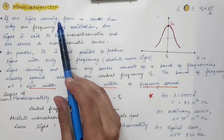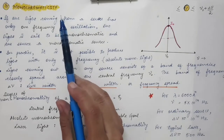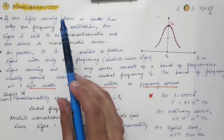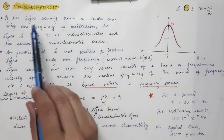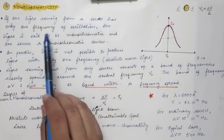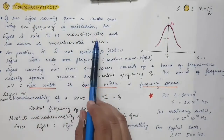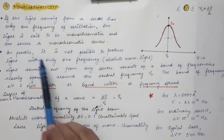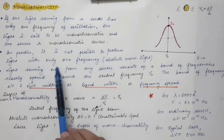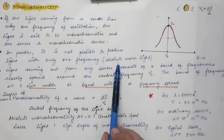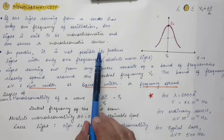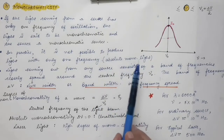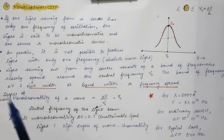Sources that emit only single-frequency radiation cannot be constructed in real life — no such sources exist. Even the laser is not a perfectly monochromatic source. If the light coming from a source has only one frequency of oscillation, the light is said to be monochromatic, but in actual practice it is not possible to produce light with only one frequency. Absolute monochromatic light is not possible, and this applies to lasers as well.